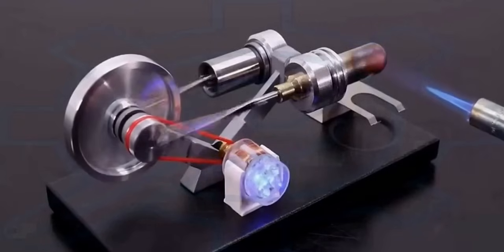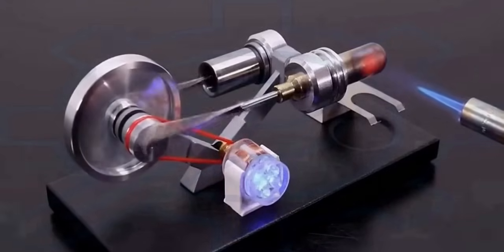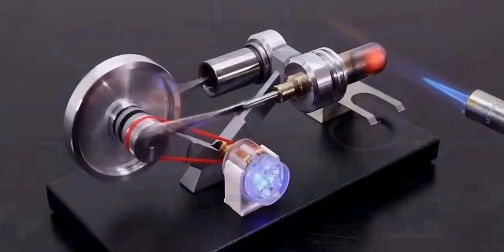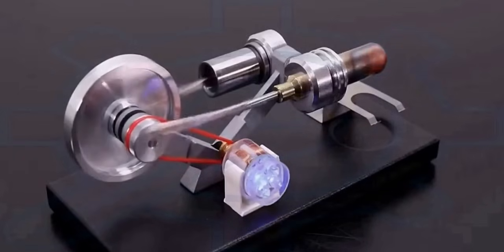The Stirling engine was invented by Scotsman Robert Stirling in 1816 as an industrial prime mover to rival the steam engine, and its practical use was largely confined to low-power domestic applications for over a century.